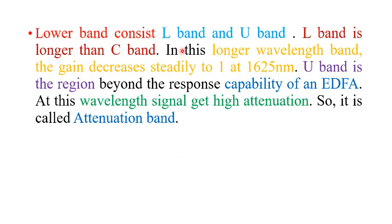The lower band consists of L band and U band — longer wavelength band and ultra long wavelength band. As the wavelength of the signal increases, the energy and gain of the signal decrease. In these longer wavelength bands, gain decreases. The U band is beyond the response capability of the EDFA — erbium doped fiber amplifier — and at this wavelength the signal experiences high attenuation, so it is called the attenuation band.